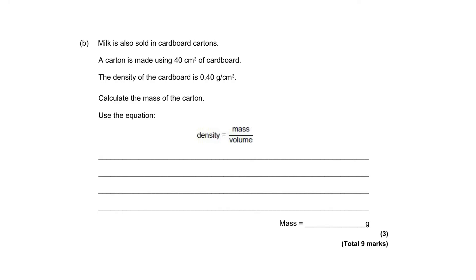Milk is also sold in cardboard cartons and a cardboard carton has got a volume of 40 cm cubed of cardboard used to make it. And the density of cardboard we're told is 0.40 grams per cubic centimeter. And we've been asked to calculate the mass of this carton made from cardboard. And we've been given the density equation to do this.